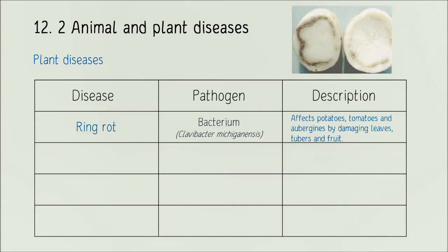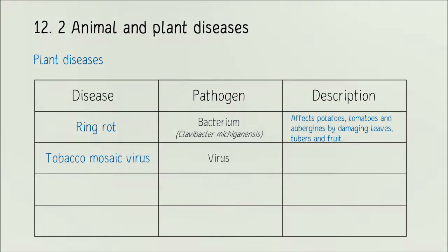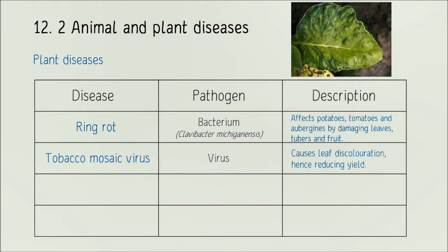The tobacco mosaic virus is clearly caused by a viral infection. The main symptoms are leaf discolouration, which reduces yield because less chlorophyll means less photosynthesis and stunted growth. Fun fact: tobacco mosaic virus was the first ever virus discovered, when two botanists were working on a tobacco plant sample.